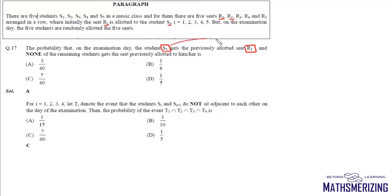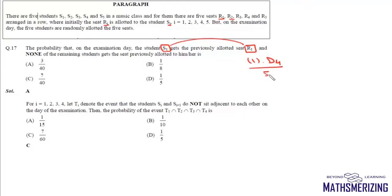If S1 goes to R1, there is only one way, and none of the remaining 4 students must get their previously allotted seat. That means we have to de-arrange these 4 students, which is done by D4, divided by the total number of ways of arranging these 5 students in 5 places, which is 5 factorial. This is the required probability. Now we need to calculate D4.